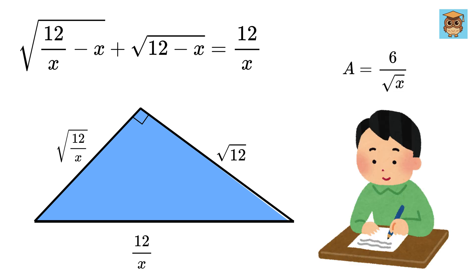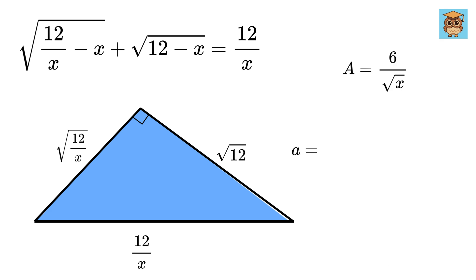If this is indeed a right triangle, then its area can also be given as this base or root 12 times this height, or root 12 over x by 2, which will be the same as 12 over root x by 2, or 6 by root x.